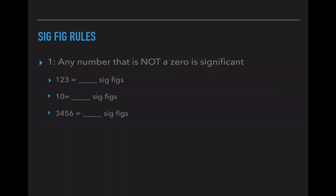Rule number one — this is the easiest sig fig rule. Any number that is not a zero is automatically significant. For 123, this tells us that we have three sig figs because all three of those digits are not zero. For the example of 10, the one is obviously not a zero, the zero is, so we would only have one sig fig.